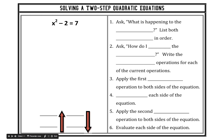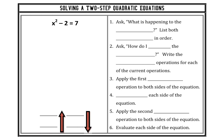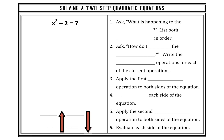Quadratic equations come in many different forms and can be solved using many different methods. These two-step quadratic equations can be solved the same way you solve any two-step equation. You'll also notice that these two-step quadratic equations only have a variable being squared — there are no other variables in these equations.